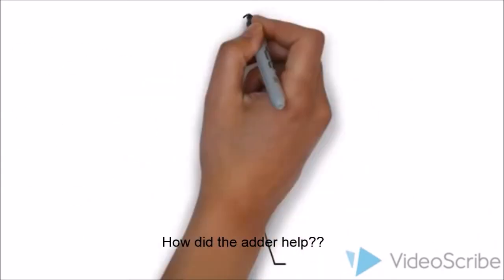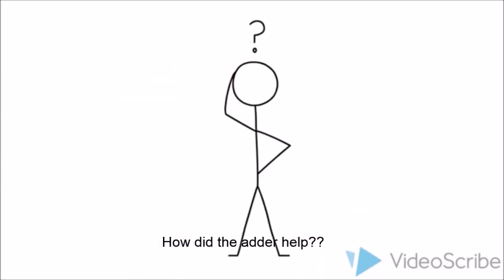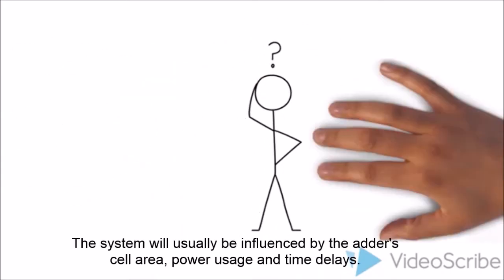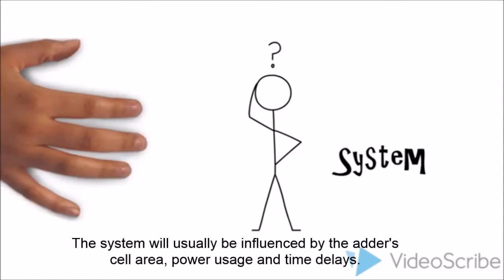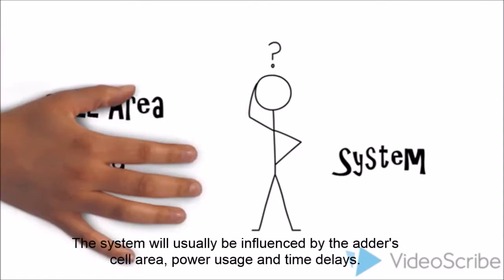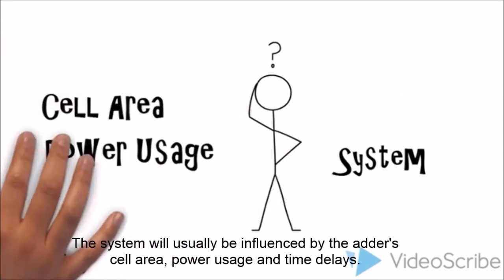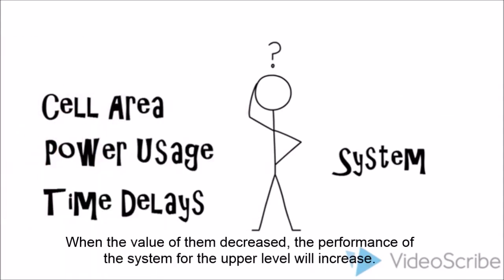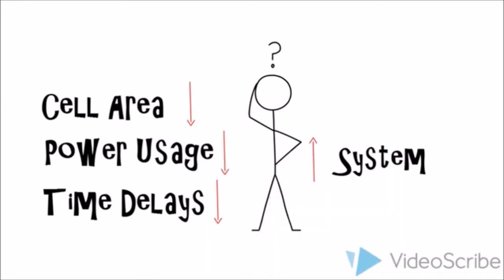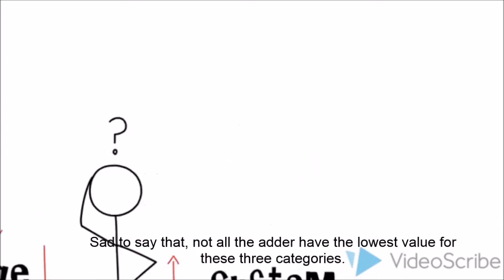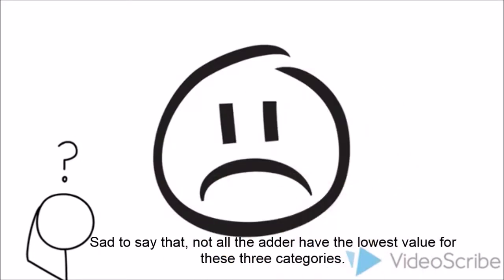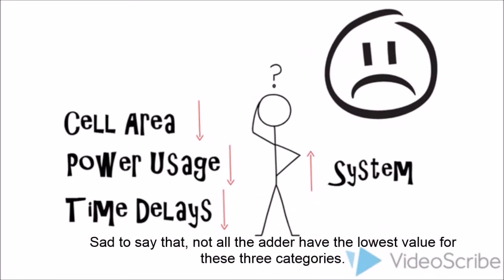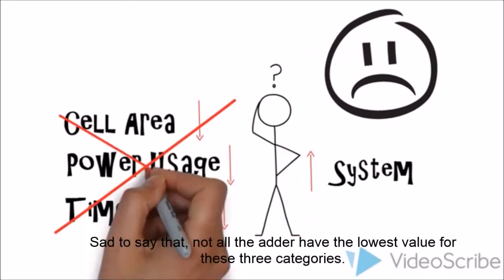How does the adder help? The system will usually be influenced by the adder's cell area, power usage, and time delays. When the value of these decreases, the performance of the system at the upper level will increase. Sadly, not all adders have the lowest values for these three categories.